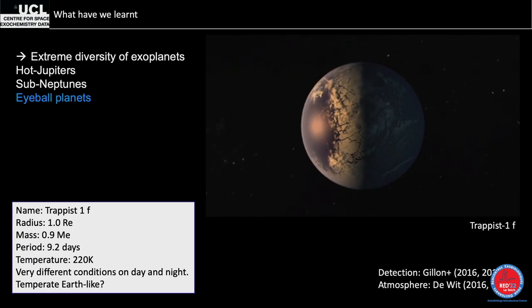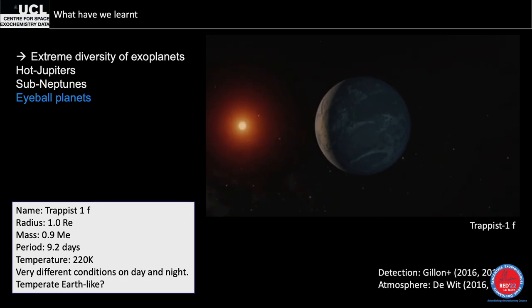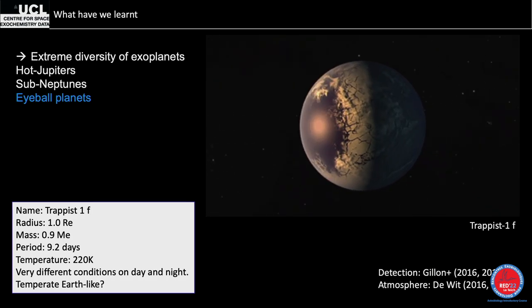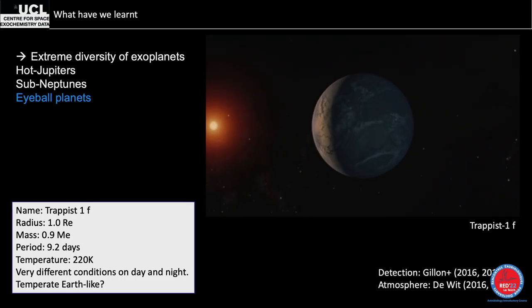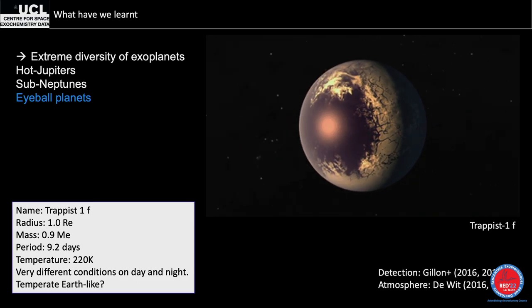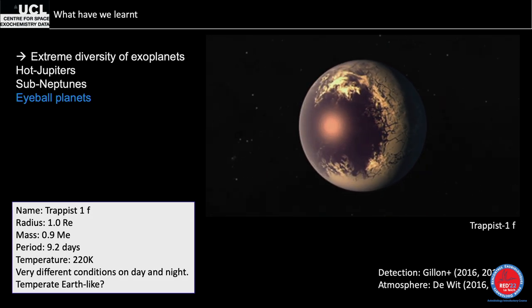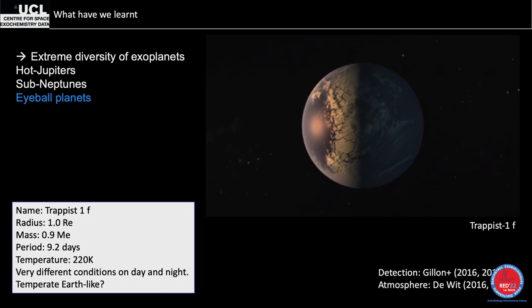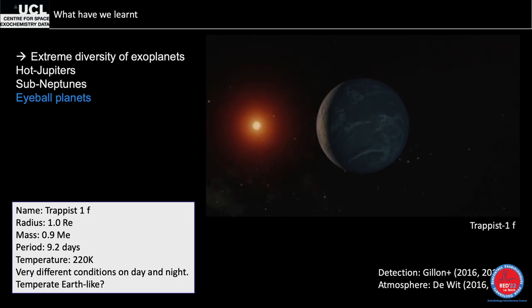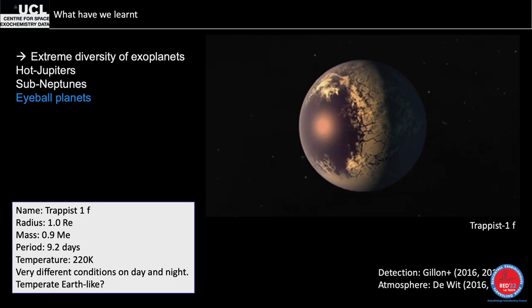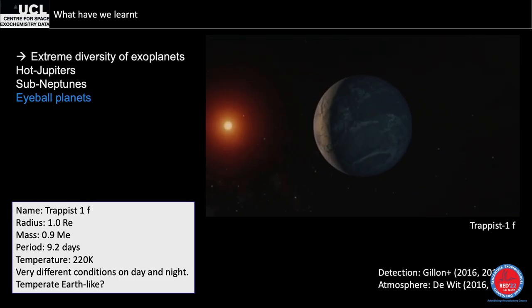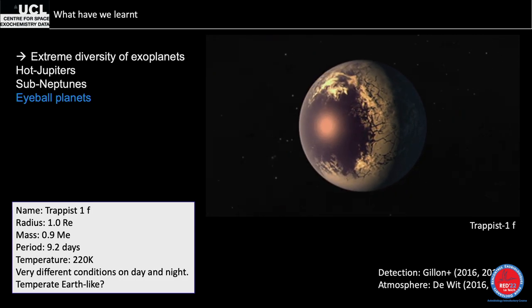TRAPPIST-1f is an habitable-zone planet. Keep in mind that most planets we study are tidally locked — very different conditions on the day side versus the night side. This one has a temperature remarkably similar to Earth and is going to be scrutinized by James Webb extensively. An HST observation indicates it doesn't have a hydrogen-dominated cloud-free envelope.